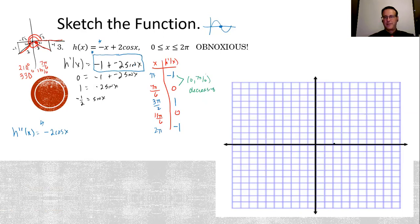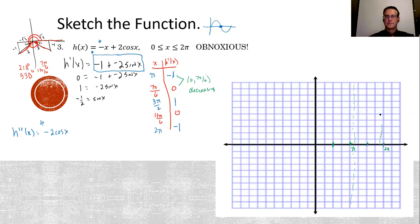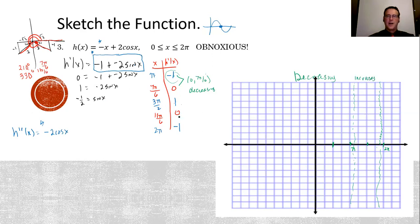I need test values around those critical points. Below 7π/6 I'll pick π, between them I'll pick 3π/2, and past 11π/6 I'll use 2π. Plugging π into h'(x): sin(π) is 0, so 0 minus 1 is -1 — that's negative. Plugging 3π/2: sin(3π/2) is -1, so -1 minus 2(-1) = +1 — that's positive. And for 2π: sin(2π) is 0, giving -1 — negative.